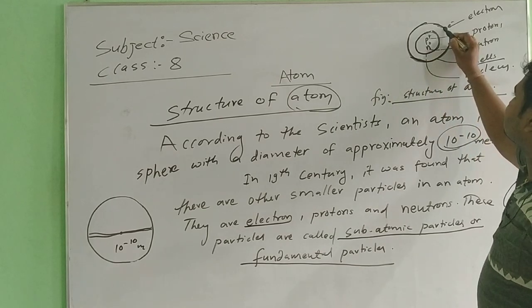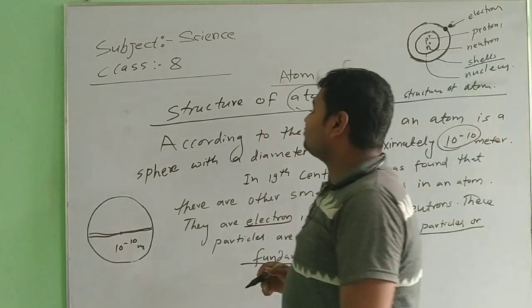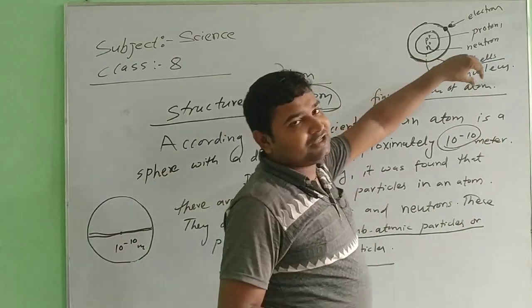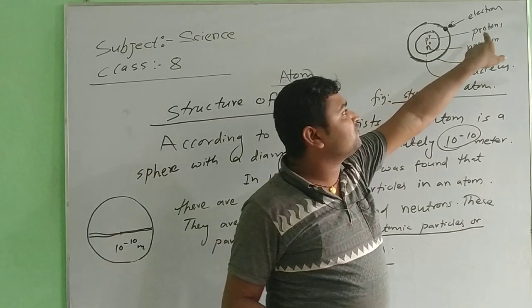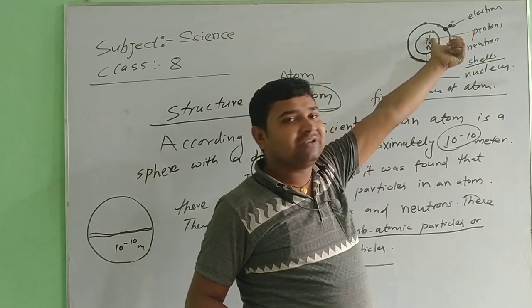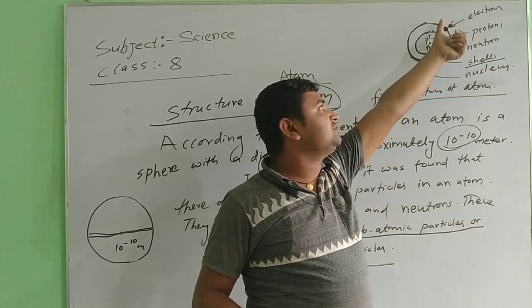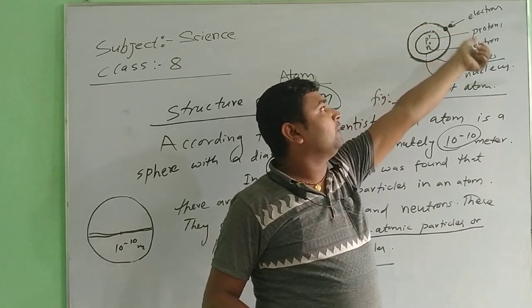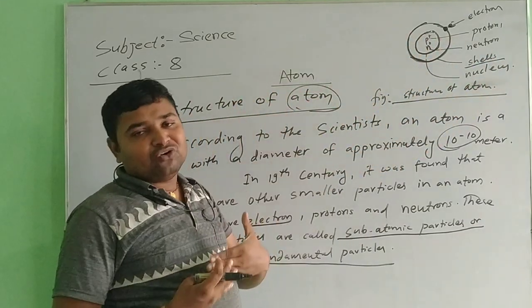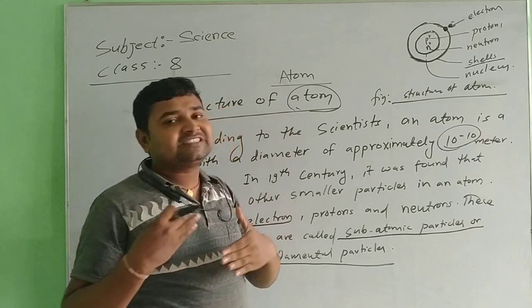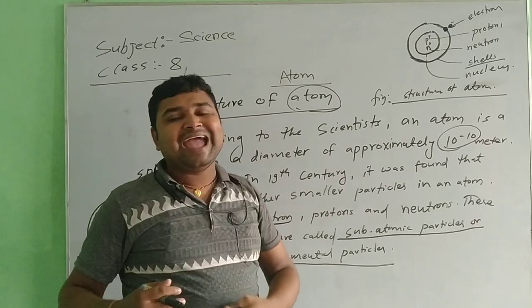This is called the shell or the orbit. In this shell or orbit, the electron revolves. Where does the electron lie? In the shell. Inside the nucleus, proton and neutron are located. So where is the proton? Proton is inside the nucleus. Neutron is also inside the nucleus. Now I will tell you about the subatomic particles — what is electron, what is proton, and what charges are carried by electrons and protons.